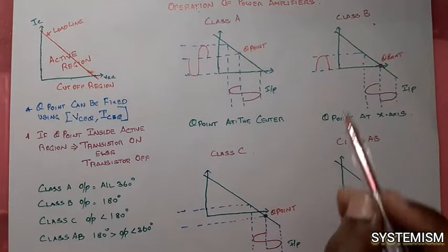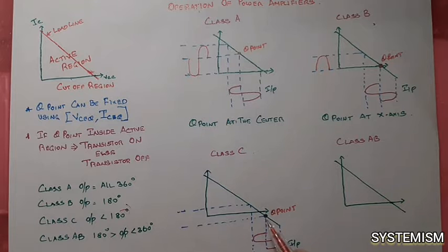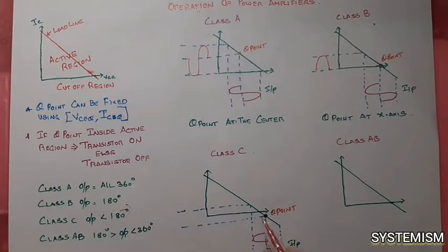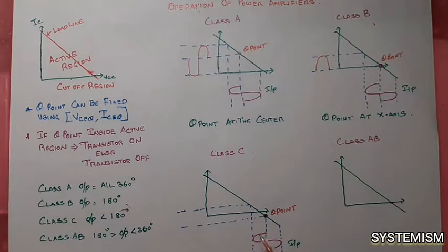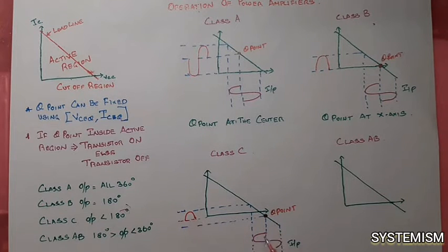For class C amplifier, the output is obtained for less than 180 degrees. So we fix the Q point below the X axis. When the input voltage increases, the Q point moves upward but remains in the cutoff region. Only after a certain voltage does the Q point start to enter inside the active region, giving output for less than 180 degrees. For all other degrees, the Q point enters inside the cutoff region and no output is obtained.